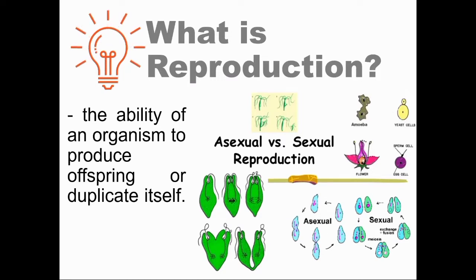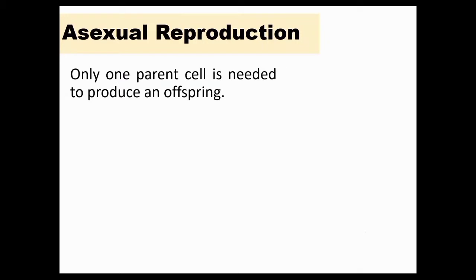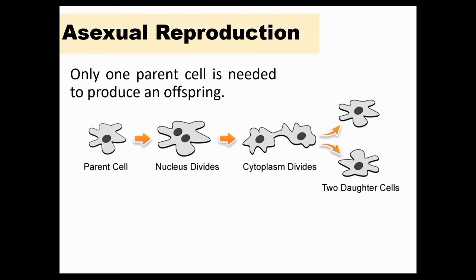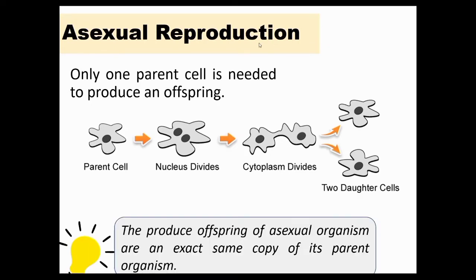Today, we will be exploring how sexual reproduction is different from asexual reproduction. Let's start with asexual reproduction, meaning only one parent cell is needed to produce an offspring. Simple organisms reproduce through asexual reproduction. Offspring come from a single parent and have the exact copy of the genes, hence referred to as a clone. In asexual reproduction, a parent organism does not need a mate or partner to reproduce. The offspring of asexual organisms are an exact same copy of their parent organisms.